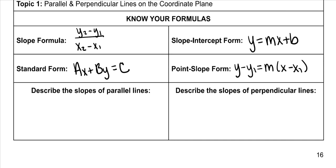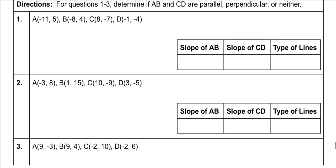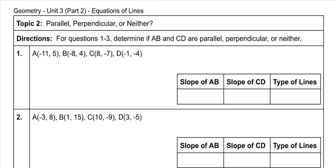Slopes of parallel lines have the same slope. Slopes of perpendicular lines have the negative reciprocal. First, we need to state whether these lines are parallel, perpendicular, or neither.